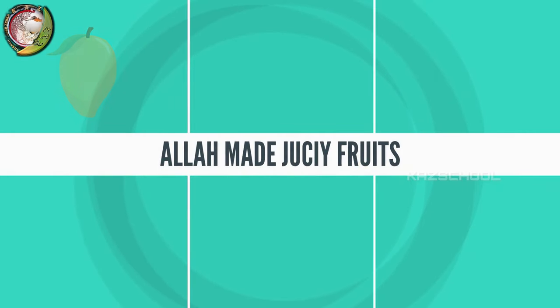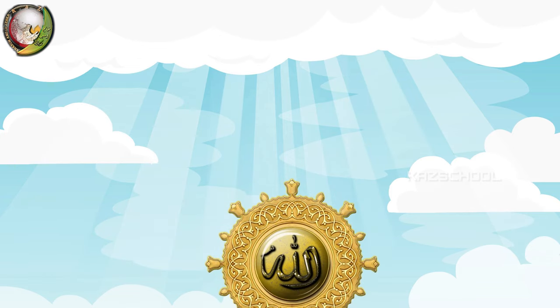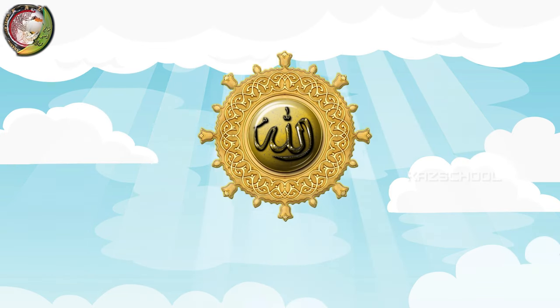Allah made juicy fruits, mangoes, oranges and cherries, crunchy apples, sweet grapes and soft bananas. Where did the fruits come from? Allah made them all.